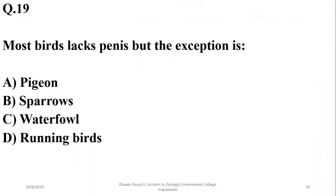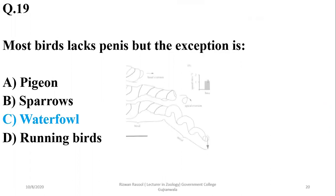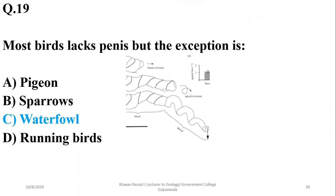Most birds lack a male reproductive organ — a penis — but the exception is certain species of waterfowl or polar birds, which have a developed penis or male reproductive structure. Otherwise, it is missing in most birds and sperm transfer is achieved with the help of the cloaca or cloacal kiss only.